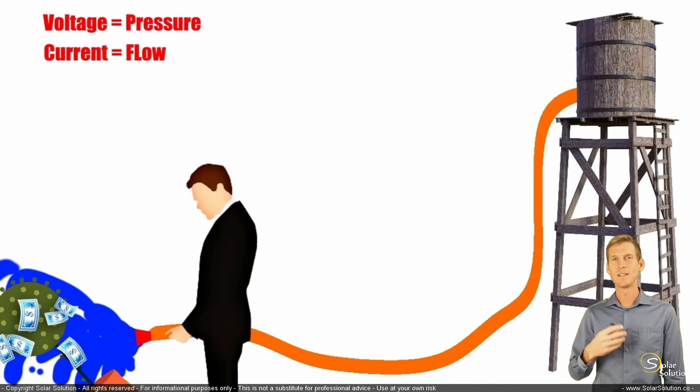Of course, it's a very simple explanation and you're probably saying yeah, I get it Jesse. But by this example, I think it's easy to lock in your brain what voltage is, what current is, and also what the relationship between the two of them is.